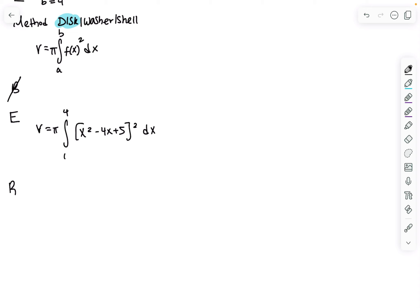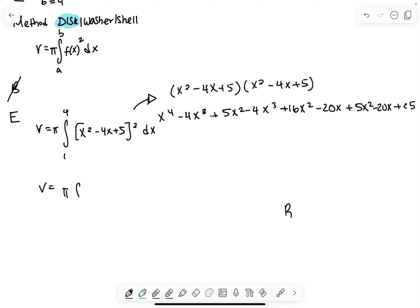How would you do this? You have to square everything first, and you cannot just square every term. Remember that. Take it out to the side and actually multiply them together. That becomes the volume of π integral from 1 to 4.